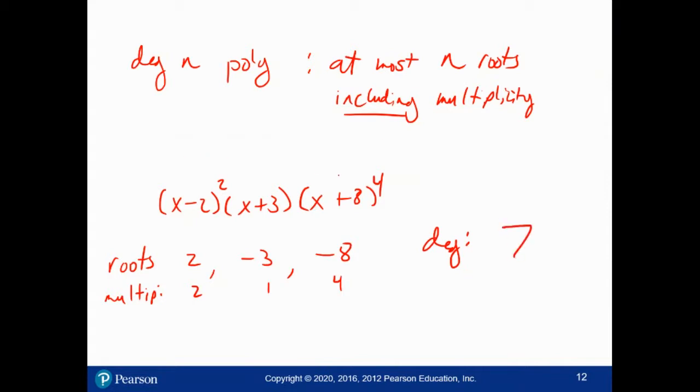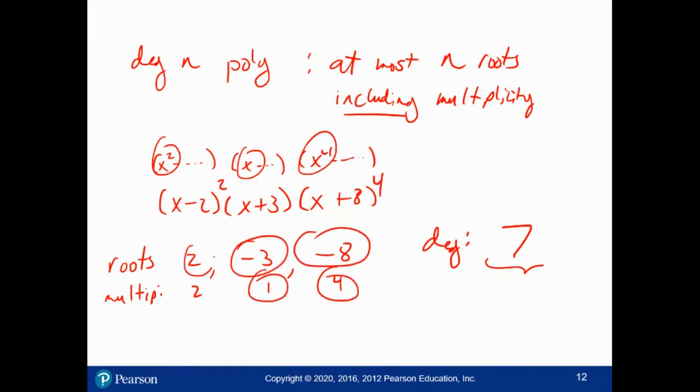What's the degree of this polynomial? 7. If I multiplied the whole thing out, this term here is going to give me an x squared plus some other stuff. This gives me an x plus some other stuff. This is ultimately going to give me an x to the fourth plus some other stuff. When I multiply them all out, I'm going to get an x to the seventh as my highest power. So this could have at most seven roots up to multiplicity. It has this root four times, this root once, and this root twice. So it does have seven roots up to multiplicity, but not more than that.